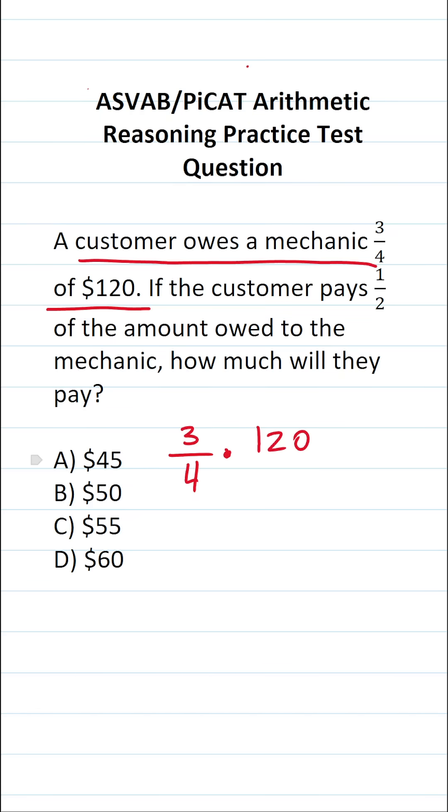Now, to make this math very easy to do, I'm going to rewrite $120 as a fraction by placing it over 1. Again, $120 divided by 1 is $120. This enables me to cross-reduce. More specifically, I can say 4 goes into 4 one time.